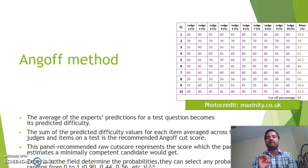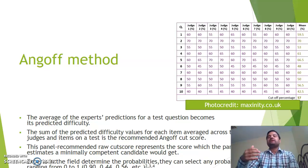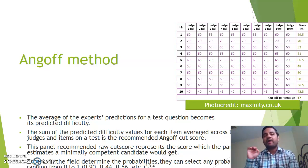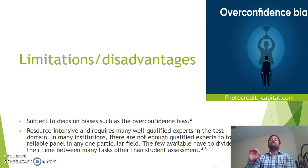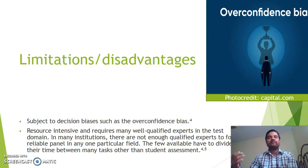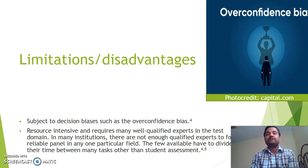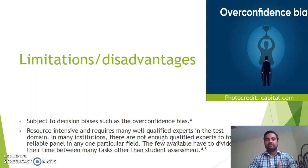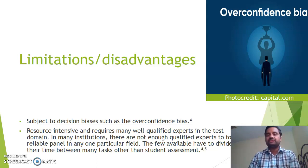This panel-recommended raw cut score represents the score which the panel estimates a minimally competent candidate would get. The experts that determine the probabilities can select any value from 0 to 1. With the Angoff method, there can be overconfidence bias, limited resources, and also a need for well-qualified experts, which may not always be available in many institutions due to time constraints beyond student assessment.